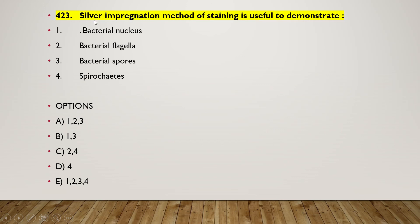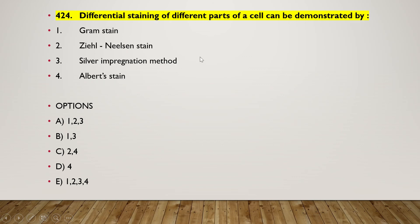Next question: silver impregnation method of staining is useful to demonstrate — (1) bacterial nucleus, (2) bacterial flagella, (3) bacterial spore, (4) spirochetes. The right answer is option C — two and four is the right answer.